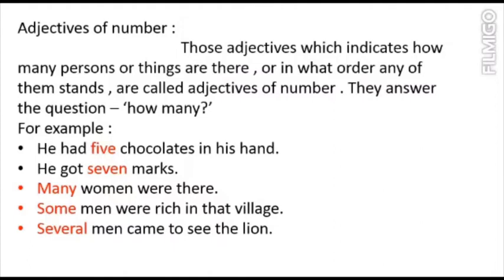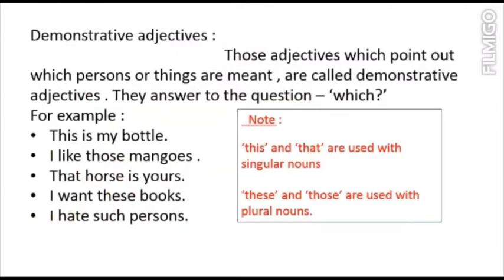Next come demonstrative adjectives. Those adjectives which point out which persons or things are meant are called demonstrative adjectives. They point to a particular person or thing. This is used when the person or thing we are pointing to is close to us, and that is used when the person or thing is far away from us.